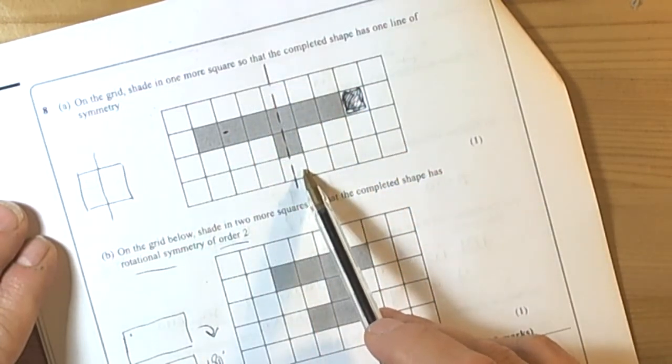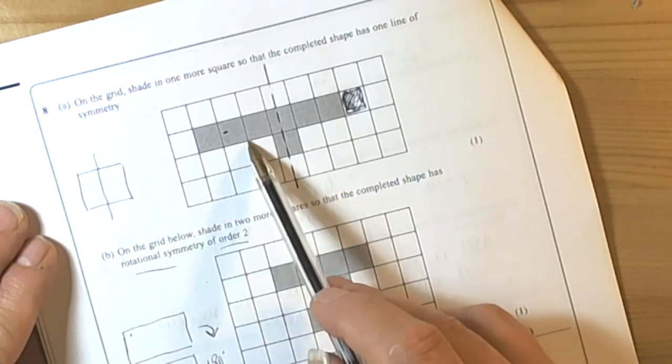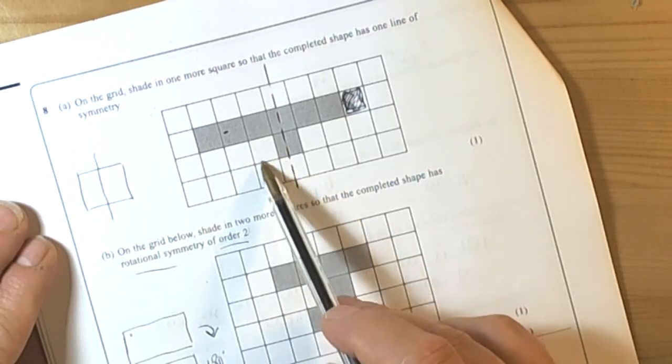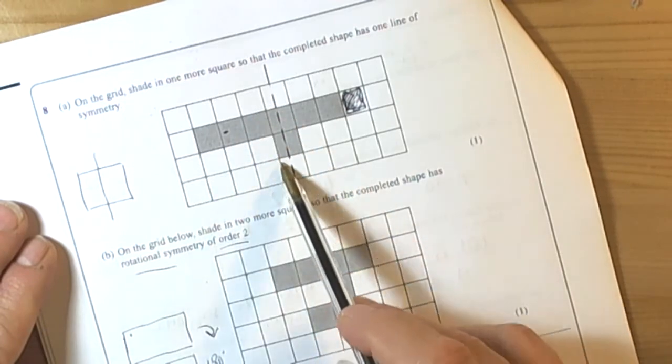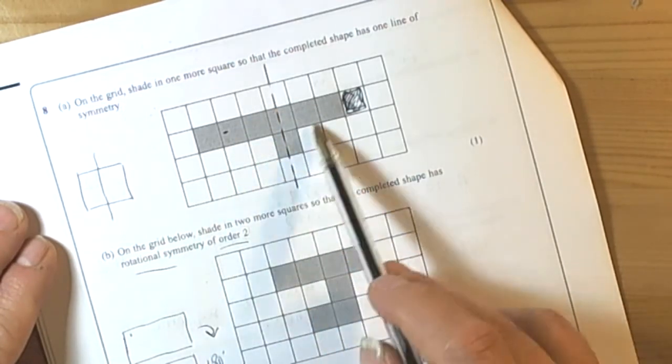We could have put the square in other places. For example, we could have put it here and that would also create a line of symmetry through this position. So there are various places, but this one would have worked.